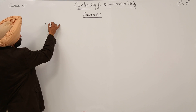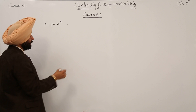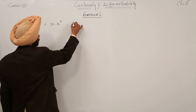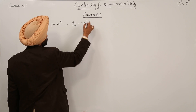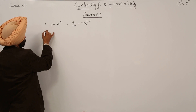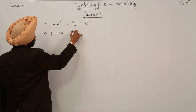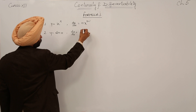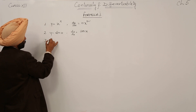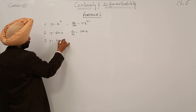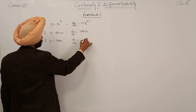Number 1: y is equal to x raised to power n. Then the derivative dy/dx is equal to n times x raised to power n minus 1. Number 2: y is equal to sin x, and dy/dx is equal to cos x.